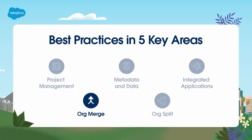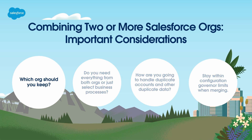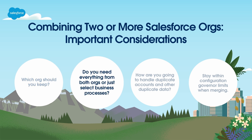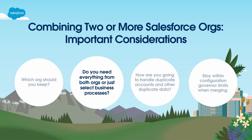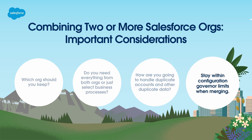As an admin, you'll need to consider some important questions if you're going to combine orgs. First, which org should you keep? Typically, customers keep the largest org — the one with the most configuration and data. But the smallest org has the least amount of technical debt and gives businesses a chance to refresh. However, the largest org could cost the most to migrate. Keep in mind, starting with a brand new org is also a possibility. Second, do you need everything from both orgs or just select business processes? Complete a review of both systems, looking for similarities, gaps, and obsolete processes — only move what you need. Don't saddle yourself with additional technical debt. Third, how are you going to handle duplicate accounts and other duplicate data? You will need to merge this data, which can have other implications, such as account ownership in the merged org. And finally, remember to stay within configuration governor limits when merging.